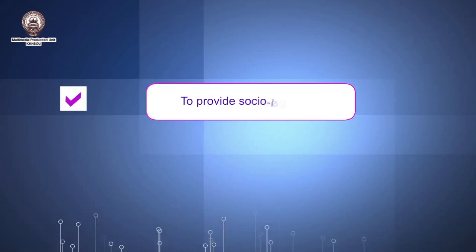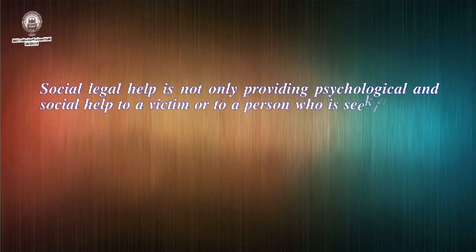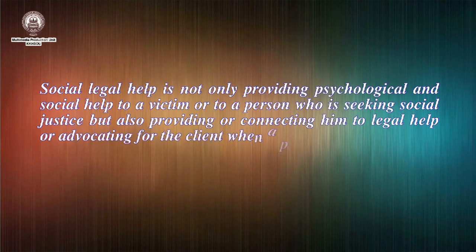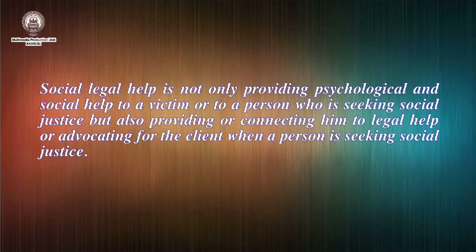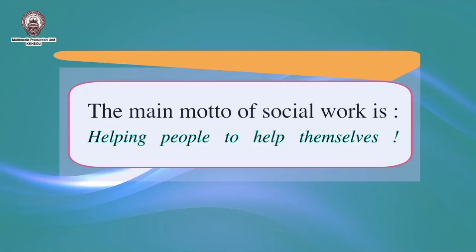To provide social legal help — directly linked to the objective of providing social justice. Social legal help is not only providing psychological and social help to a victim or person seeking social justice, but also connecting them to legal help or advocating for the client. Now let us see the main motto of social work: helping people to help themselves. This focuses on empowering the client — not only empowering the individual but also helping him understand his strength and the way he or she can develop oneself without being completely reliant on the social worker.